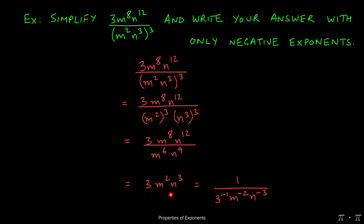When we move all the terms to the denominator, the 3 to the 1 which is here will change to 3 to a negative 1. m squared will change to m to the negative 2. n cubed will change to n to the negative 3.